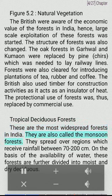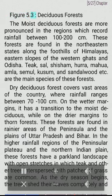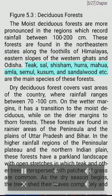Tropical deciduous forests are the most widespread forests in India. They are also called the monsoon forests and spread over regions which receive rainfall between 70 to 200 cm. On the basis of the availability of water, these forests are further divided into moist and dry deciduous. The moist deciduous forests are more pronounced in regions which record rainfall between 100 to 200 cm. These forests are found in the northeastern states along the foothills of the Himalayas, eastern slopes of the Western Ghats and Odisha. Teak, Sal, Shisham, Hora, Mahua, Amla, Semul, Kusum and Sandalwood are the main species of these forests.